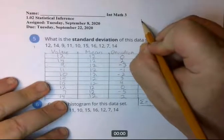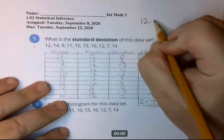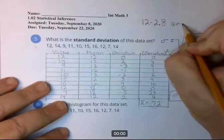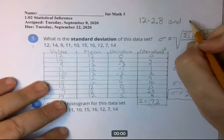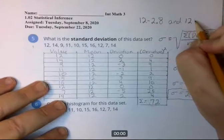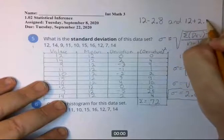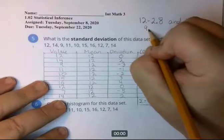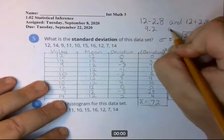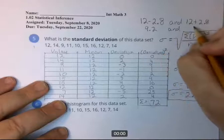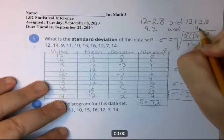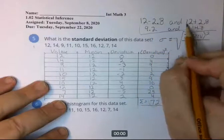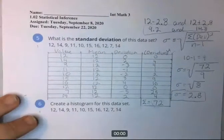Minus one standard deviation from the mean would be the mean minus 2.8, and one standard deviation above the mean would be the mean 12 plus 2.8. So that would give you 9.2 there, and it would give you 14.8 there.